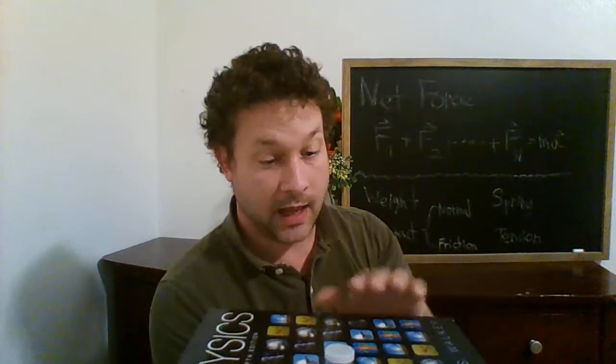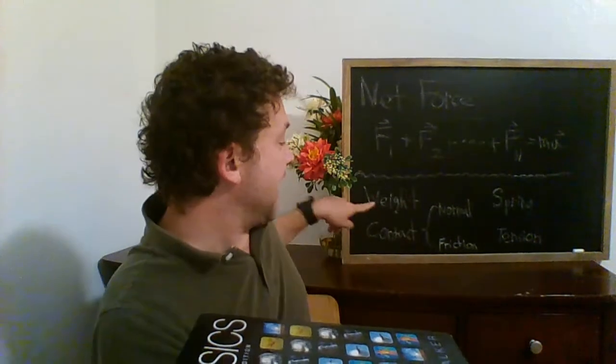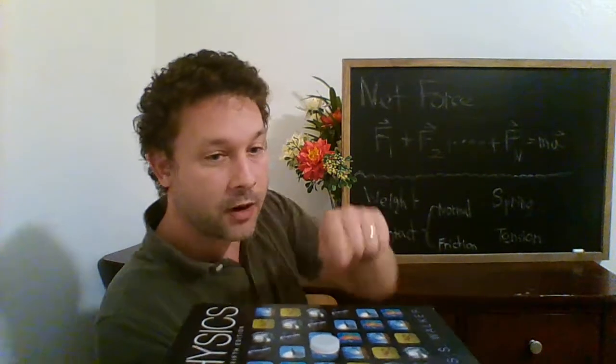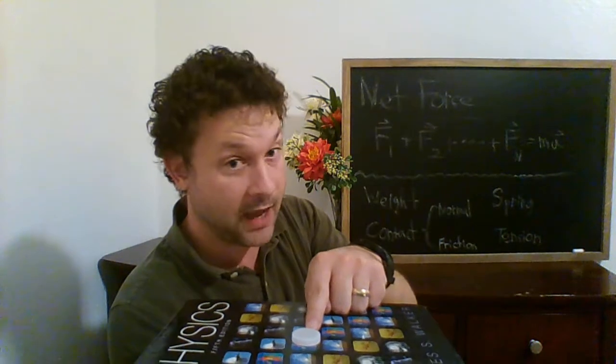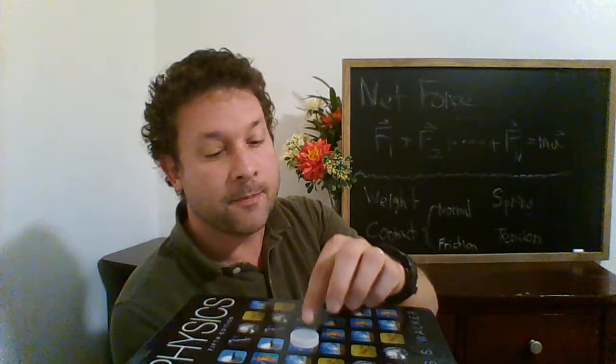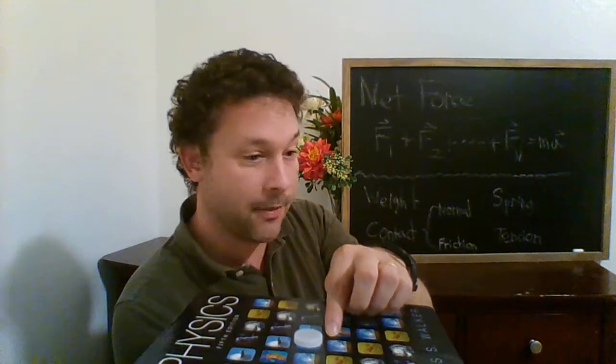That force is called the contact force. We just talked through weight, weight is easy. Then the contact force is the other force acting on the bottle cap in this little demonstration. The bottle cap not accelerating, even though it has weight. The contact force is supplied by the contact of the bottle cap with the surface of the table. That provides an equal and opposite force which balances out the bottle cap's weight.